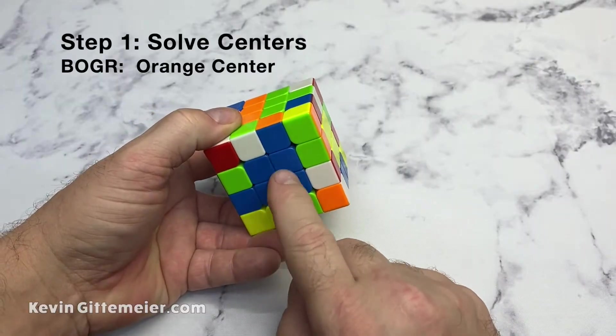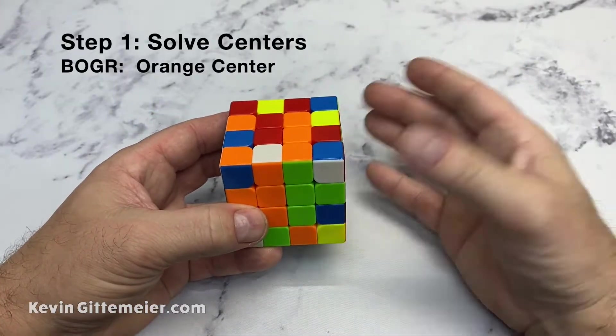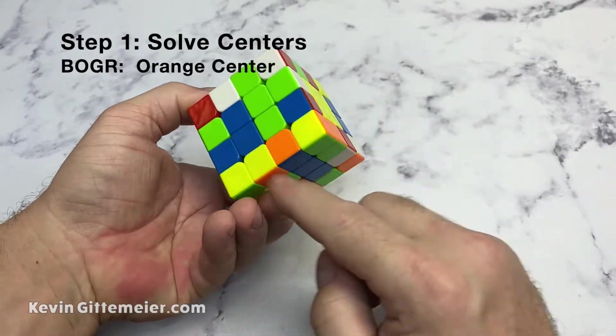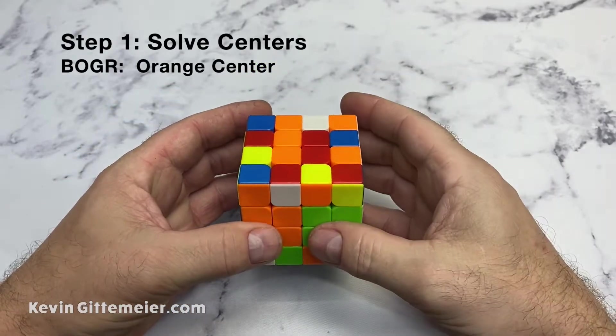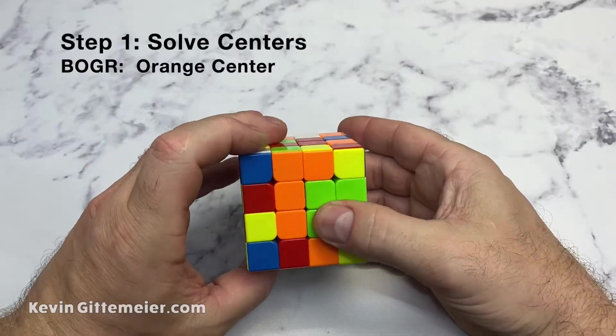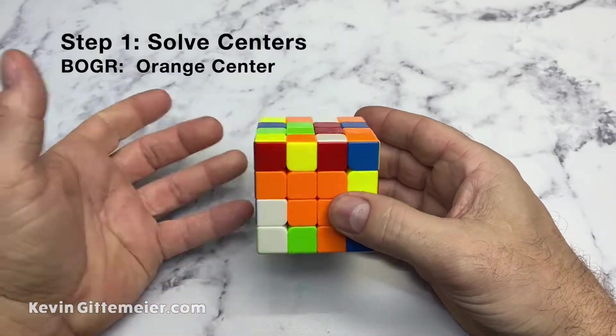Now I have to make sure not to mess up this blue center I just formed. So again, if I just join those, I mess up my blue center. So what I have to do is put them in the same slice, and then I want to bring this down, move it over, and then slice back up.